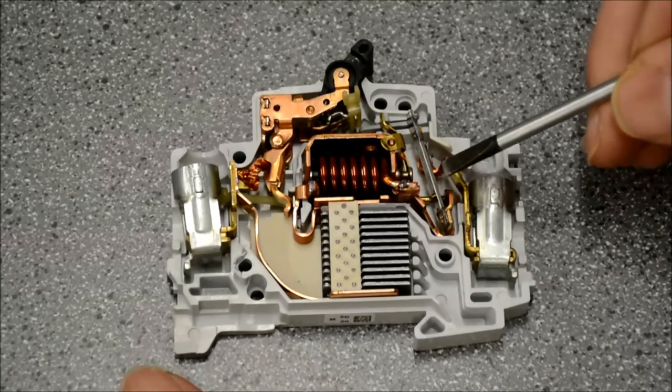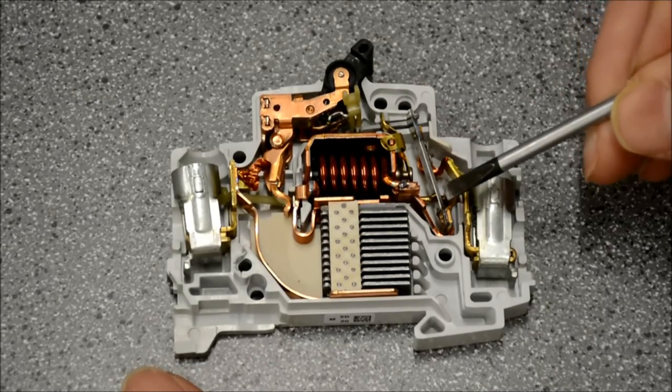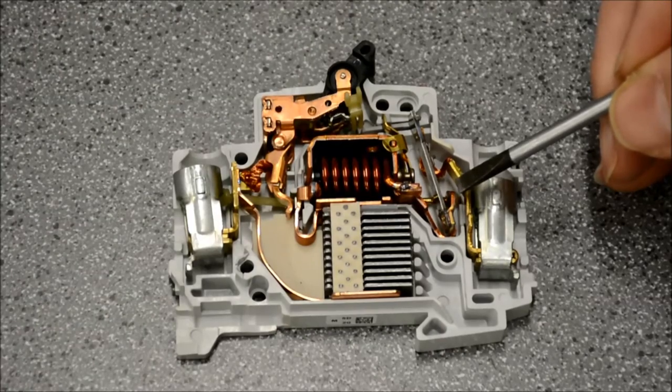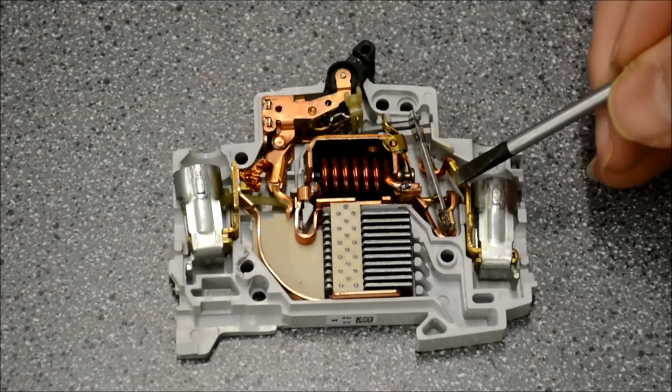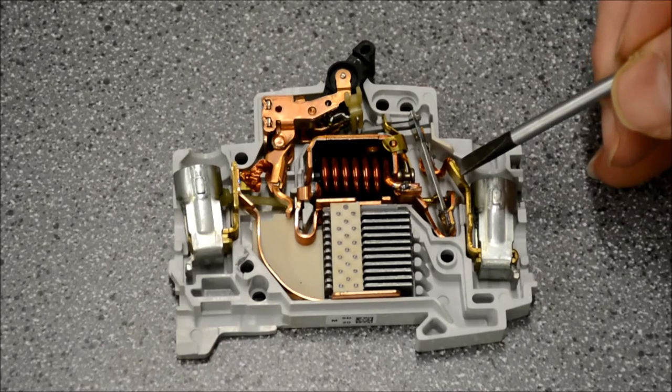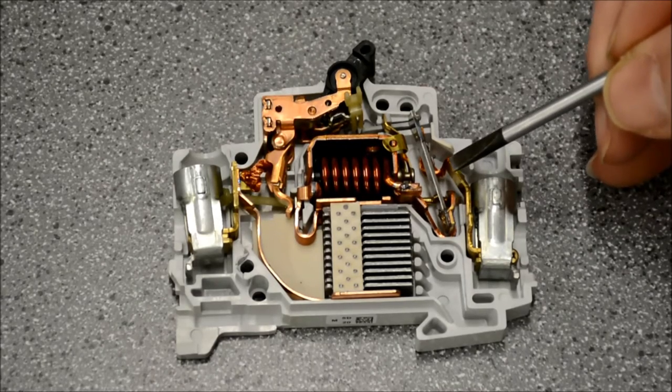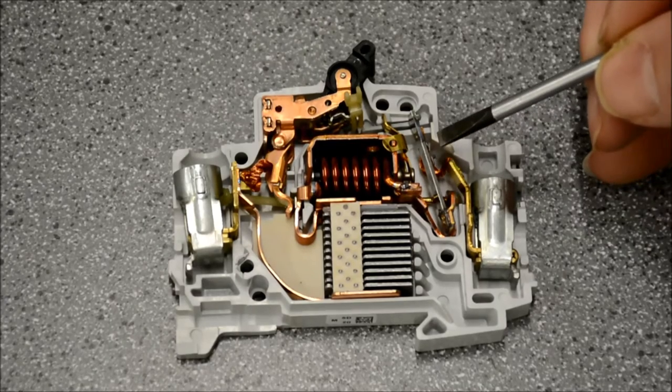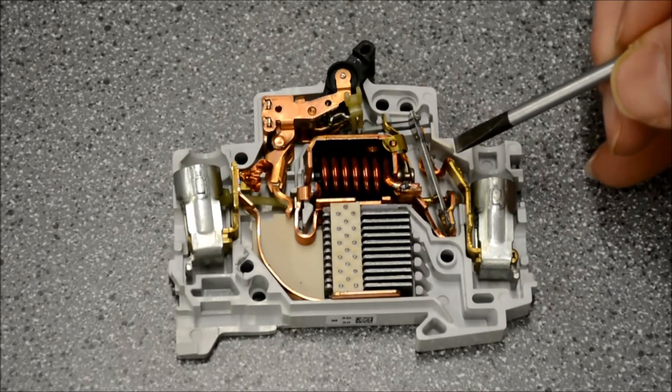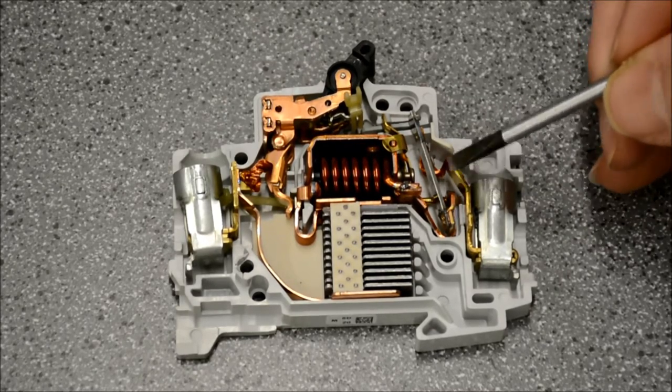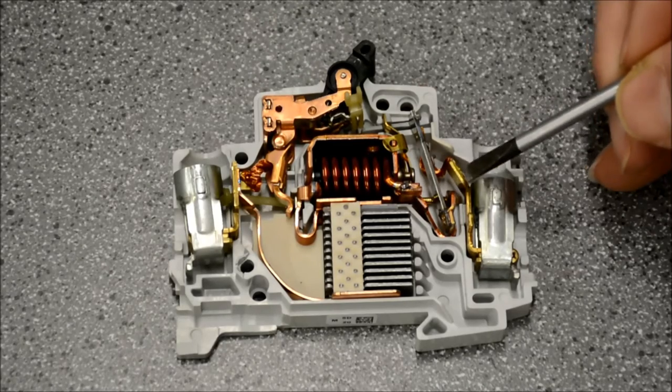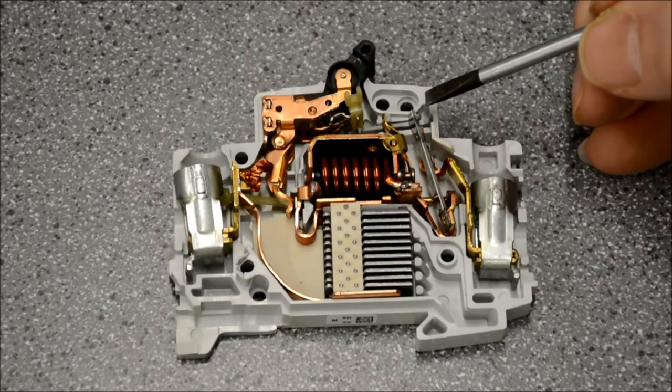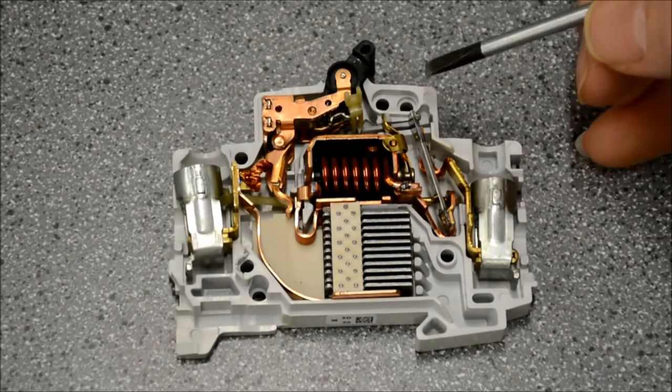Method number two is handled by this silver guy here known as a bimetallic element. Given its name, bimetallic, it is made up of two dissimilar metals that are bonded together. The important thing to know about a bimetallic element is that when it is heated, those two metals expand at different rates. Since they're bonded together, they tend to expand in a curved fashion, and we're able to exploit that principle to create motion inside the circuit breaker, which would lead to a trip.